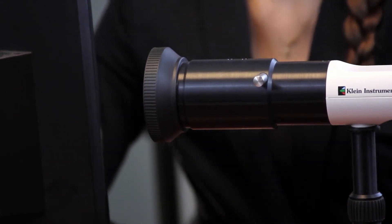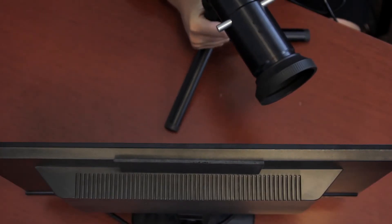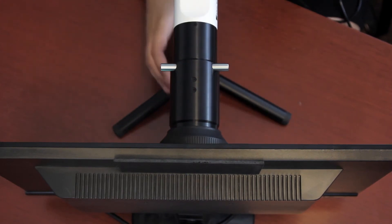The extension tube can be used for measuring hard to reach displays like laptops. Make sure the K10A is positioned straight on and directly at the center of the screen.